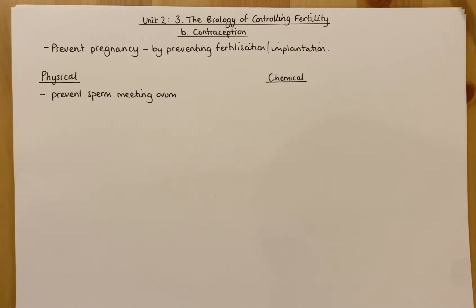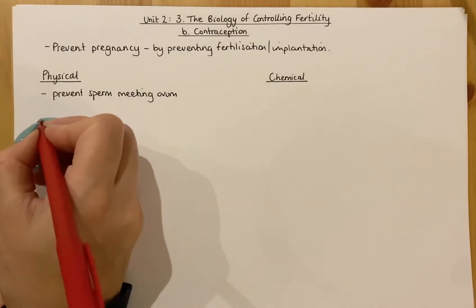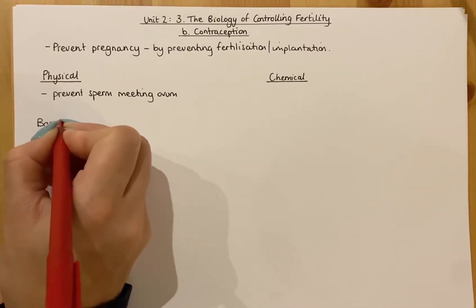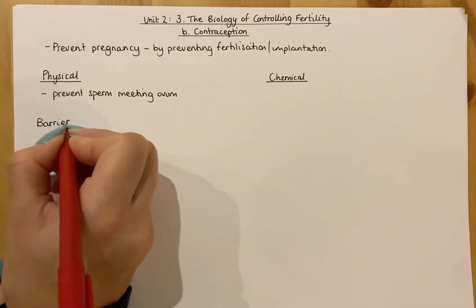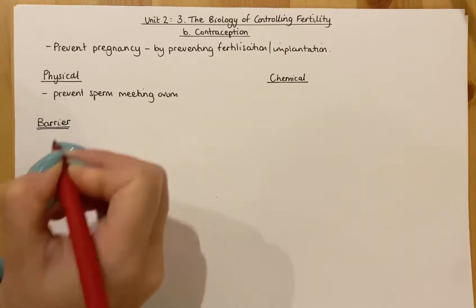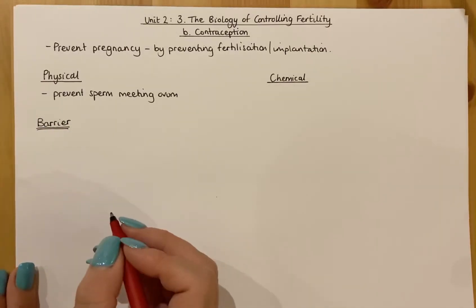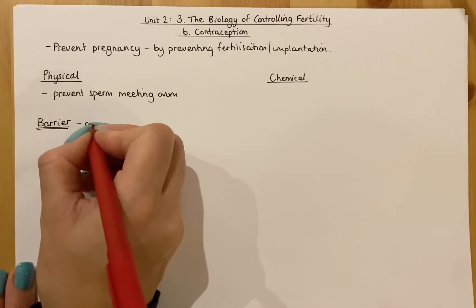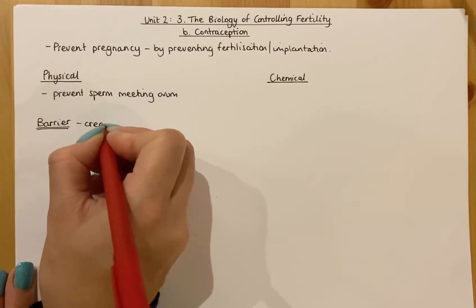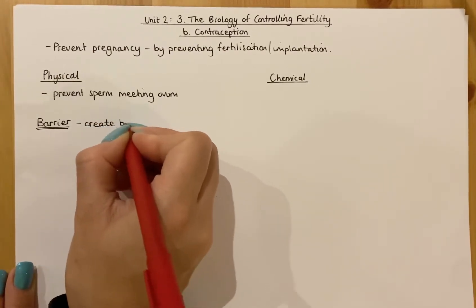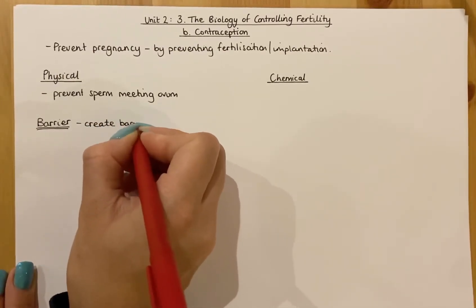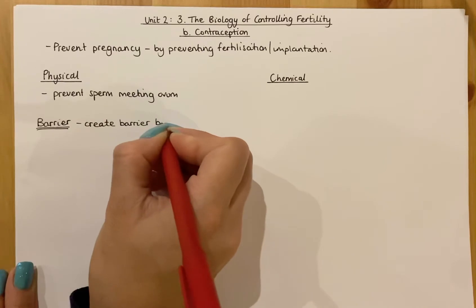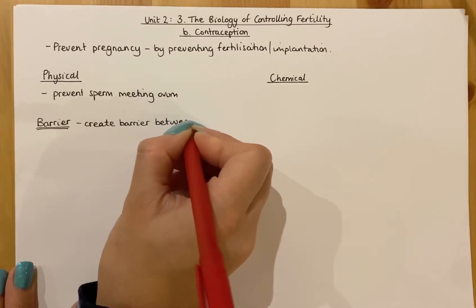There are different types of physical contraception. We have barrier methods, which are quite commonly known. Barrier methods create a barrier between the sperm and the ovum, and therefore prevent fertilization from happening.